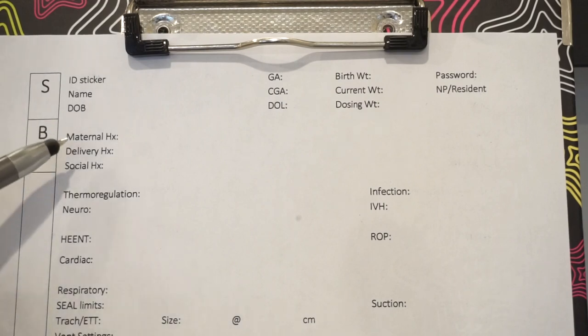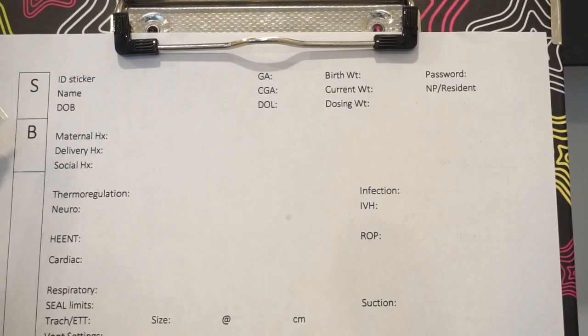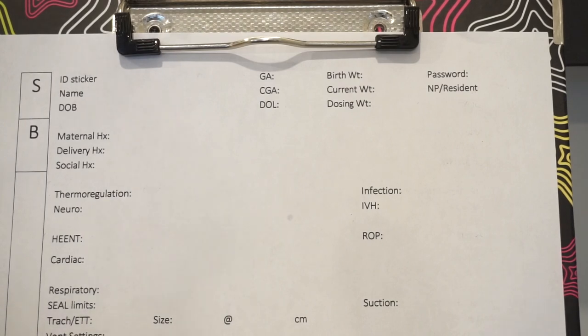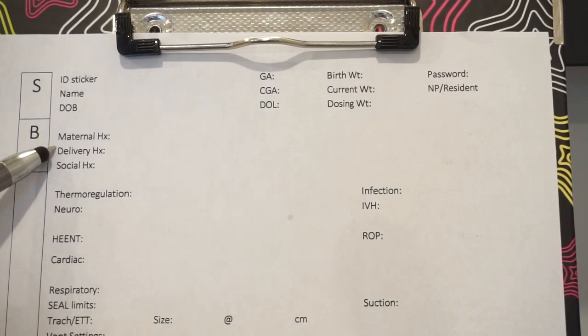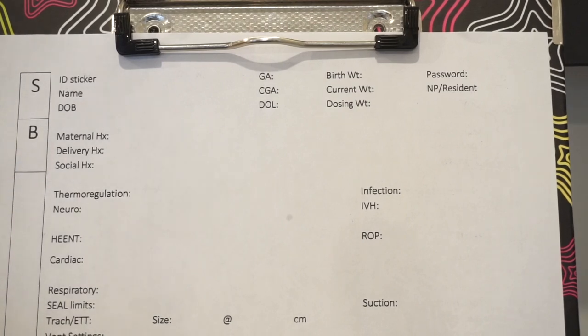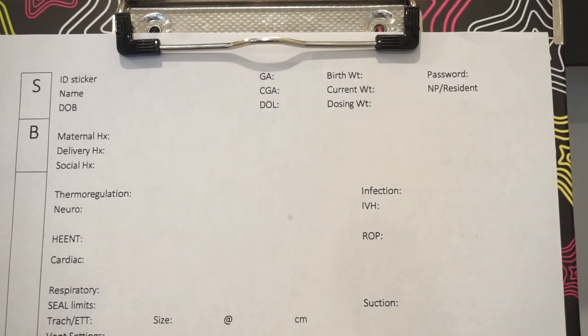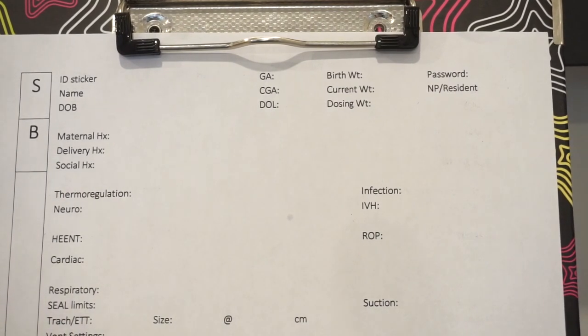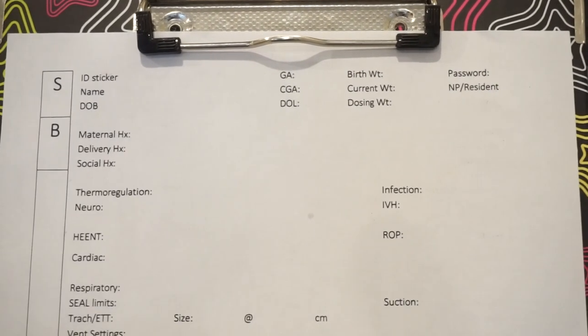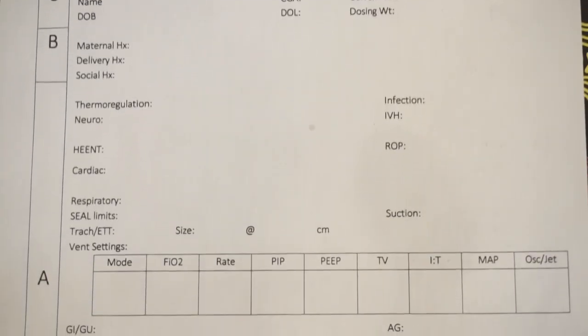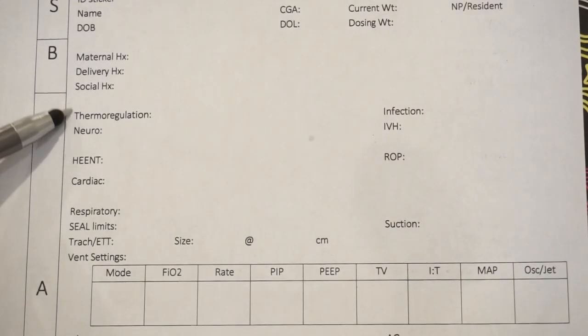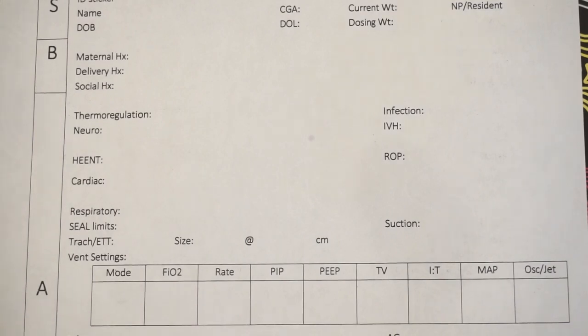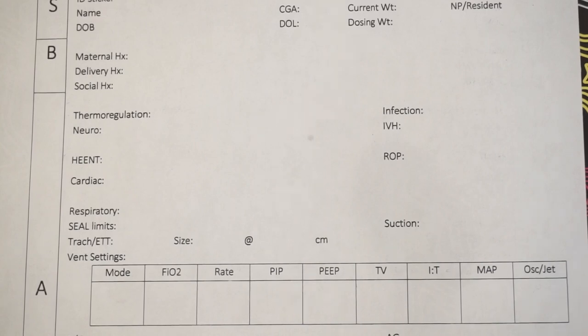So then over here we have maternal history, which of course is important for newborns because whatever the mom went through is going to directly affect the baby. And then delivery history, so like APGARs, was it a vaginal delivery or a C-section, what happened in the delivery room. Social history could be things like do parents need an interpreter, is there a CPS case going on, do they have other children at home. Thermoregulation, that would be where we talk about if they're under a radiant warmer, isolate what the temperature is set to, or if they're in a crib and dressed and swaddled, we talk about their temperatures.